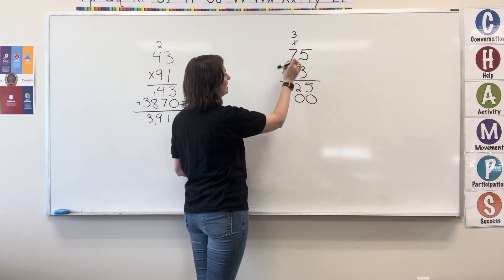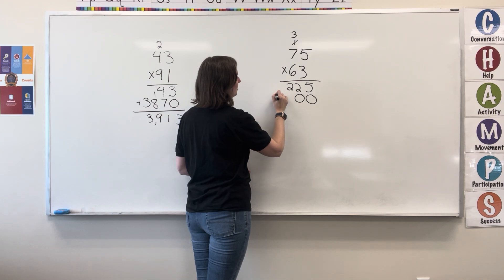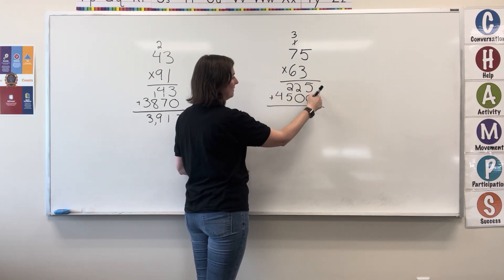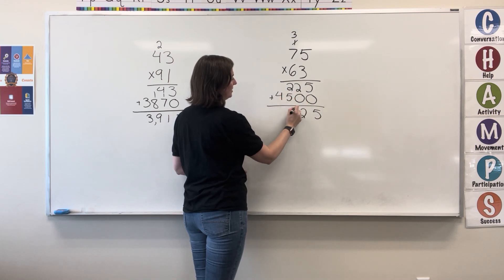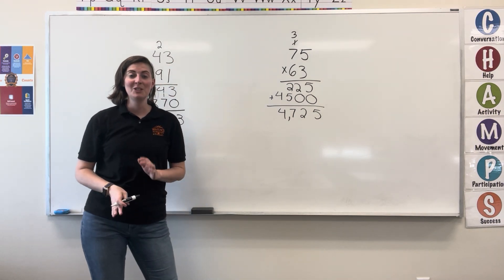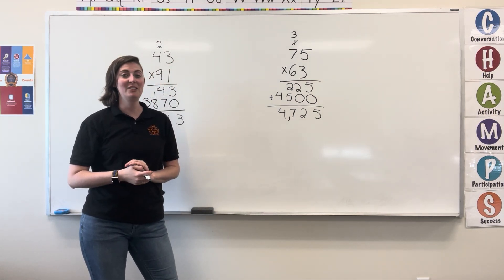6 times 7 equals 42, plus 3 equals 45. Write the 45, now add. 5 and 0 is 5, 2 and 0 is 2, 2 and 5 is 7, 4 and nothing is just 4. So we end up with 4,725.